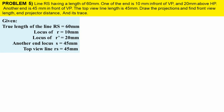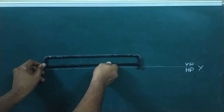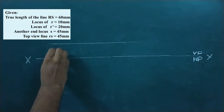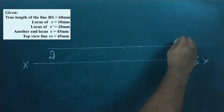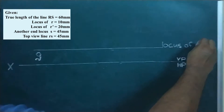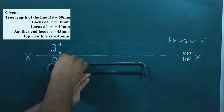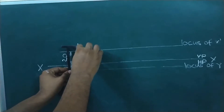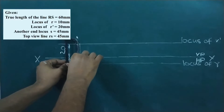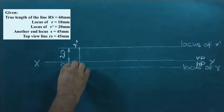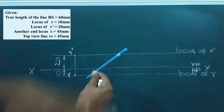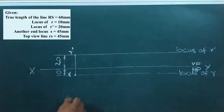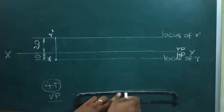Let's proceed with the problem. Draw the XY and mark the VP and HP. Mark the locus of R-dash that is 20 mm above the HP. Similarly mark the locus of R that is 10 mm in front of VP. We have one more locus detail — locus of S, the distance is 45 mm. From XY measure 45 mm and draw that locus line, name it locus of S.